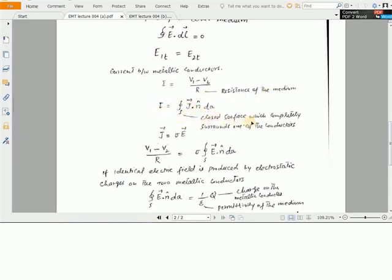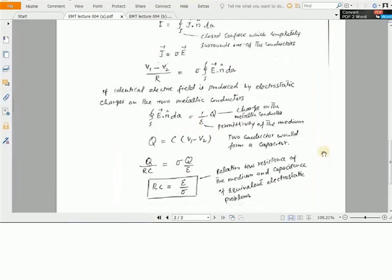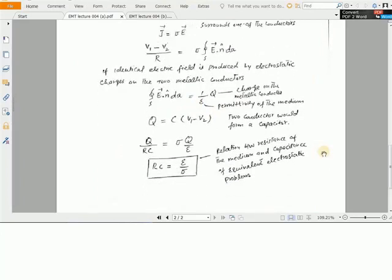Here S is the closed surface which completely surrounds one of the conductors. Using J equals sigma into E in the above equation and comparing the two current equations, we have V1 minus V2 over R equals sigma times closed integral over S of E dot N into dA. Here, if identical electric field is produced by electrostatic charge on the two metallic conductors, then the right-hand side integral part can be expressed using Gauss's law as 1 over epsilon times Q. Here Q is the charge on the metallic conductor and epsilon is the permittivity of the medium.